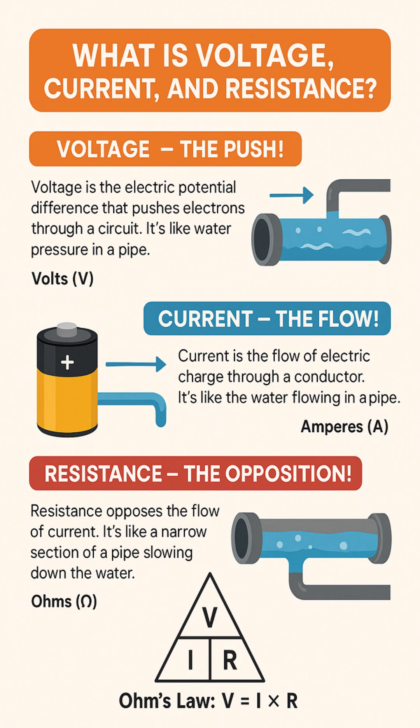First, we have voltage, which is essentially the push. Voltage is the electric potential difference that provides the force to push electrons through a circuit, much like water pressure pushes water through a pipe. The higher the voltage, the stronger the push. We measure voltage in units called volts, represented by the letter V.